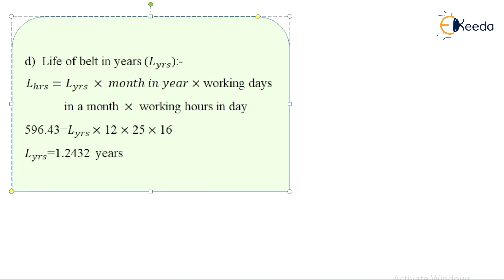Life of belt in years: L_hours = L_years × 12 × 25 × 16. Substituting 5967.43 = L_years × 12 × 25 × 16, we get L_years = 1.2432 years. This completes the numerical on V-Belt design.